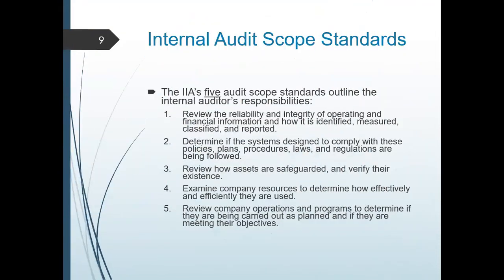Let's start with your five audit scope standards that outline the internal auditor's responsibilities. Number one, they should review the reliability and integrity of operating and financial information and how it is identified, measured, classified, and reported. Before your external audit comes into the picture, your internal audit should have done this initially, so that if there are processes in the audit plan by the external auditors that need to be done, the internal auditor can help for the external audit process.